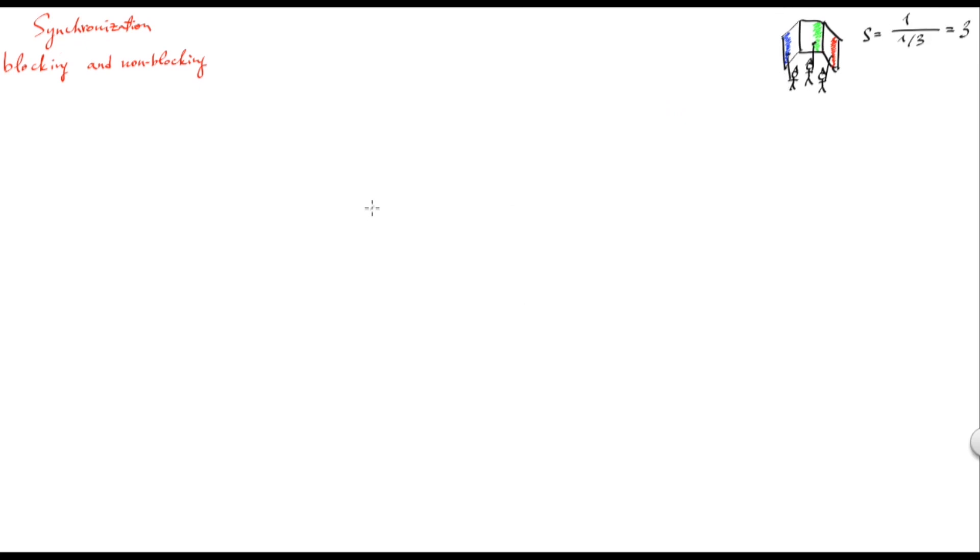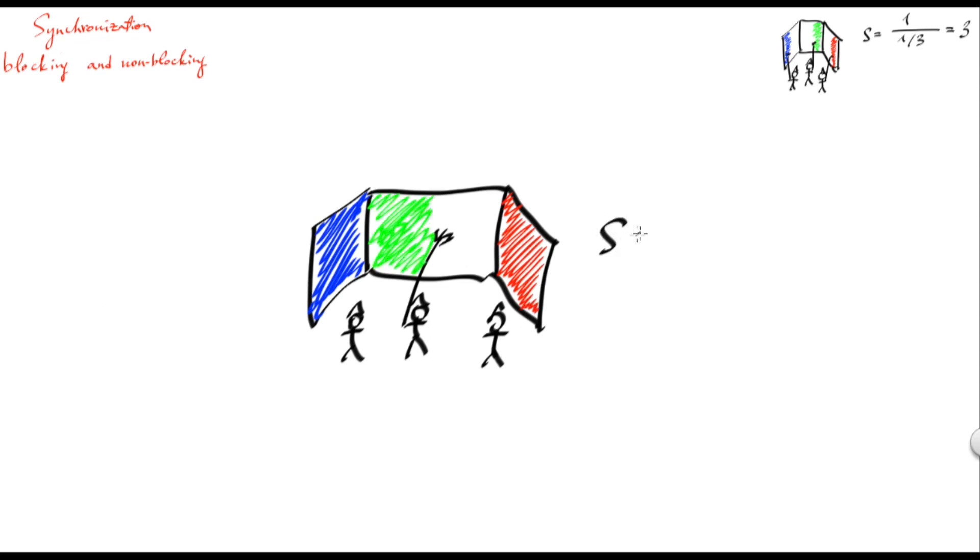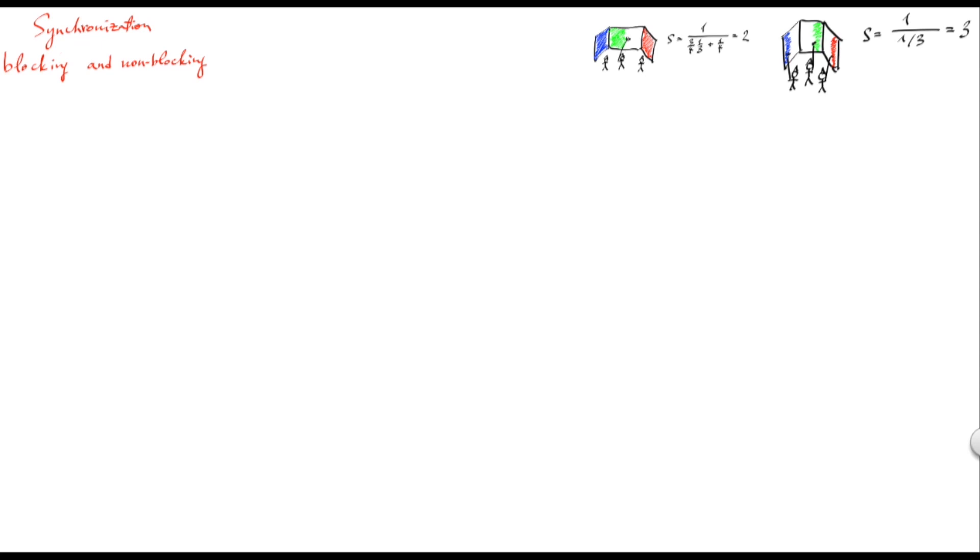But now let's consider a more complicated scenario in which one of the walls is twice as big as the other two. Now what happens is that when the first two guys finish their walls, the third one is still working. So this way the speedup should be calculated as one hour to take the work by one painter, and then three fourths of the work done by the three painters in parallel, plus one fourth which should be done sequentially by the remaining painter. So this gives us a speedup of two, even though we have three painters. So altogether this means that the part which should be done sequentially has some effect on the speedup. This observation is known as folklore Amdahl's theorem, or Amdahl's law.